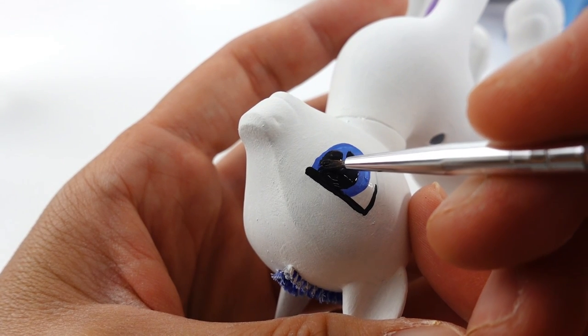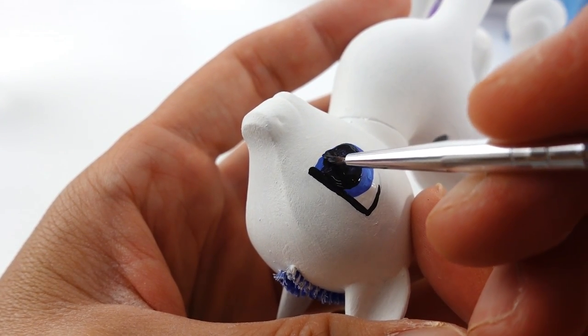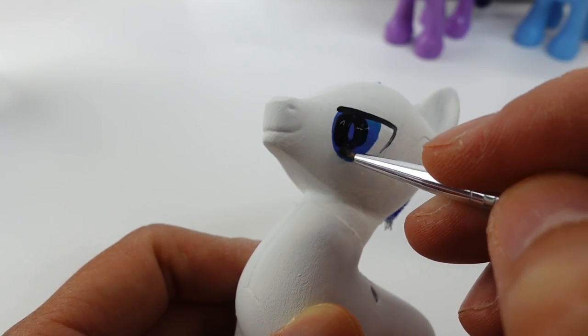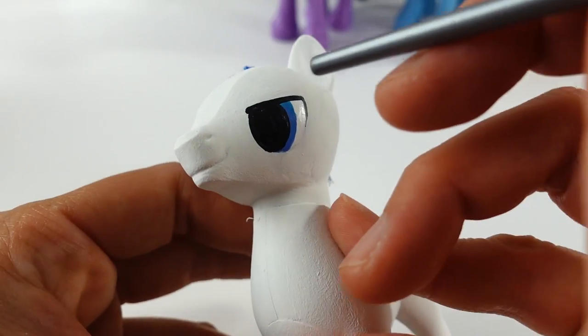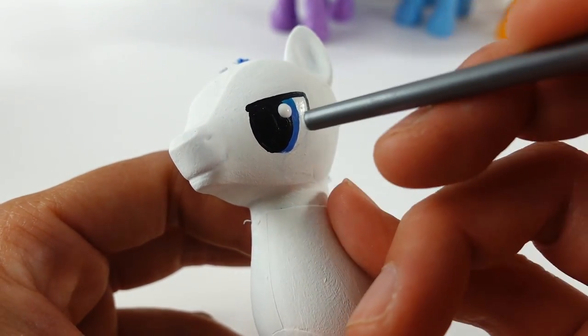Using black, we will also paint in the pupils. And with white, we'll add two white dots to each eye.